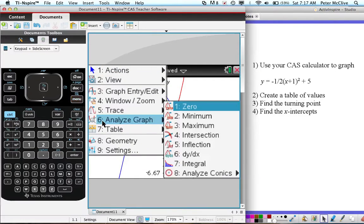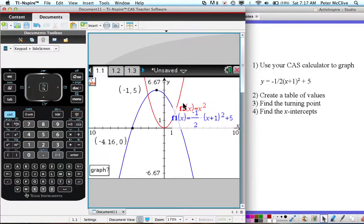And let's see the other intercept. Menu, analyze graph, 0, which graph, blue one. Lower bound just to the left of that point, just to the right, and move that away, and there are our x-intercepts. Okay, all done. Have a try of some for yourself too.